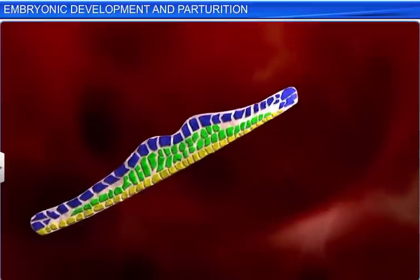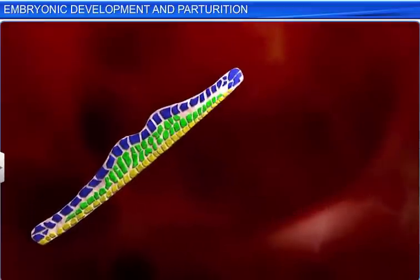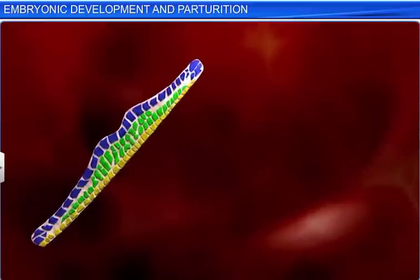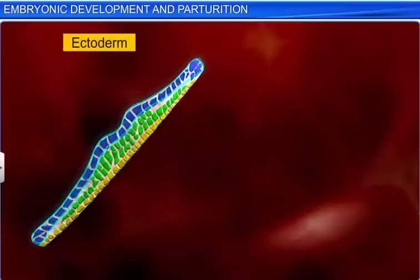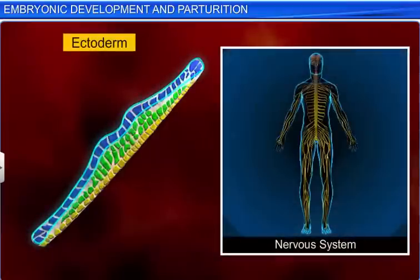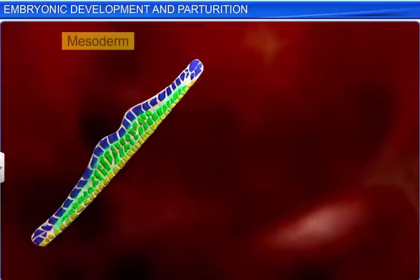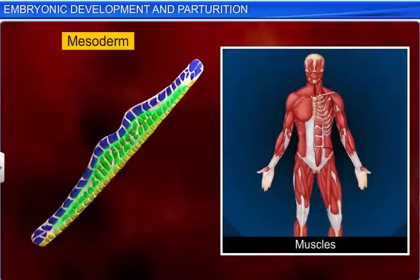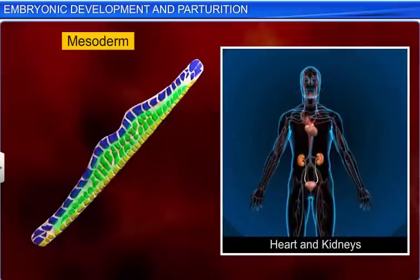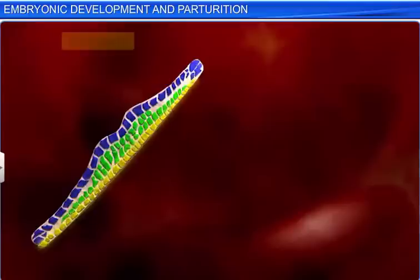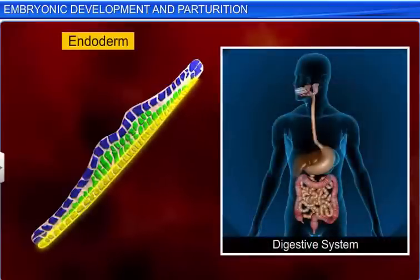The term germ layer indicates that each of the layers gives rise to tissues. The ectoderm, for instance, gives rise to the nervous system and the skin, whereas the mesoderm develops into muscles and organs such as the heart and kidneys, while the endoderm gives rise to the entire digestive system.